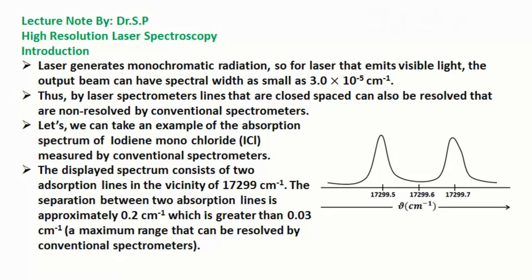Thus, by laser spectrometers, lines that are closely spaced can also be resolved that are non-resolved by conventional spectrometers. Let's take an example of the absorption spectrum of iodine monochloride ICl measured by conventional spectrometers.